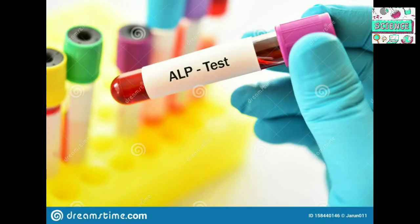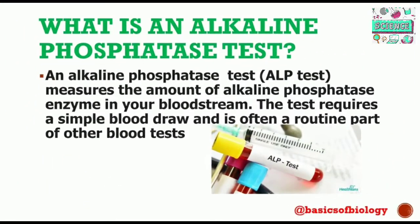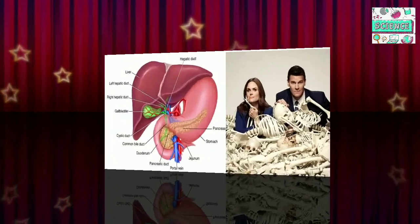In this video, we will discuss the ALP test — the alkaline phosphatase level test. The alkaline phosphatase test measures the amount of alkaline phosphatase enzyme in your bloodstream. This test requires a simple blood draw and is often a routine part of other blood tests. Abnormal levels of alkaline phosphatase in your blood most often indicate a problem with your liver.